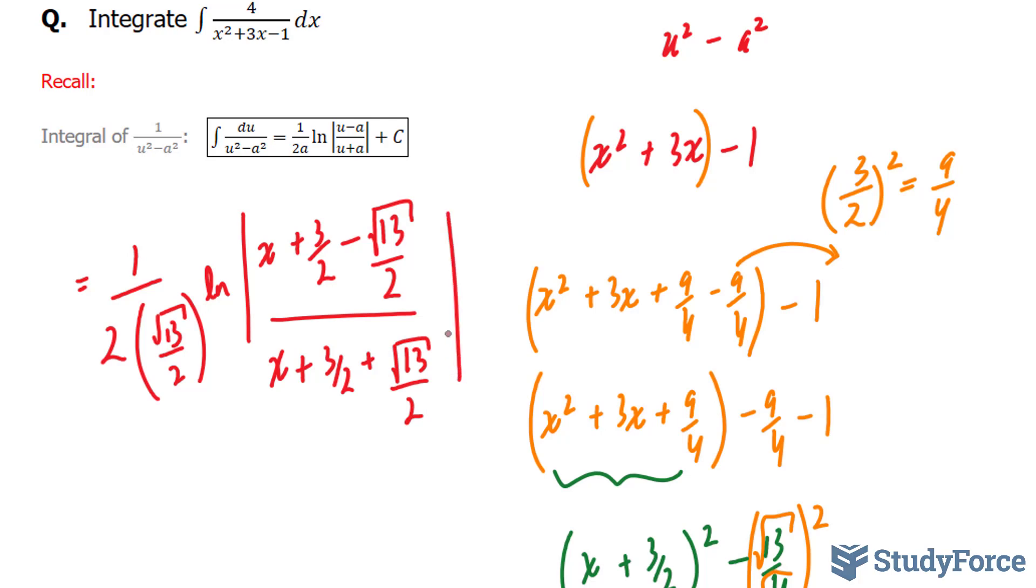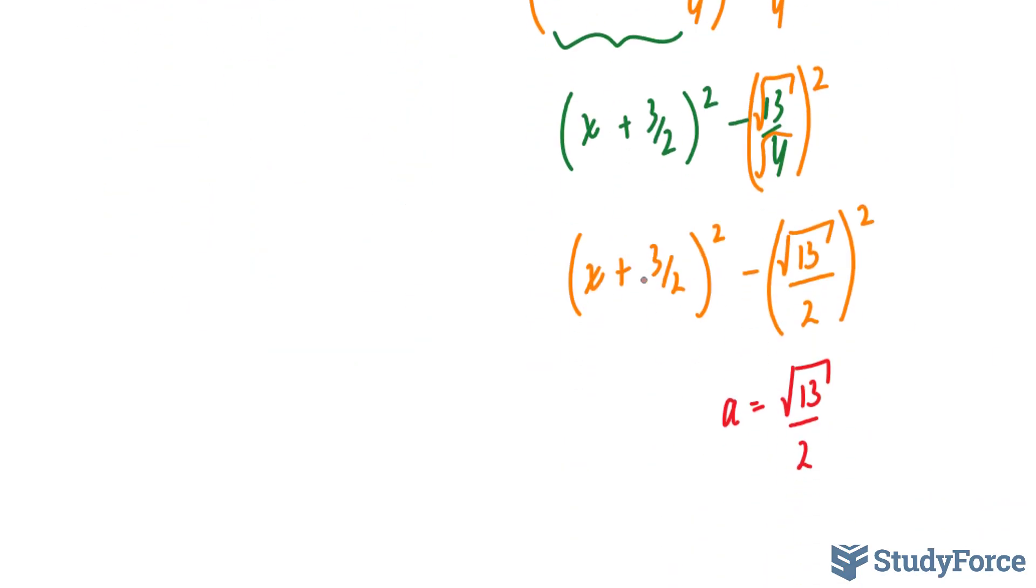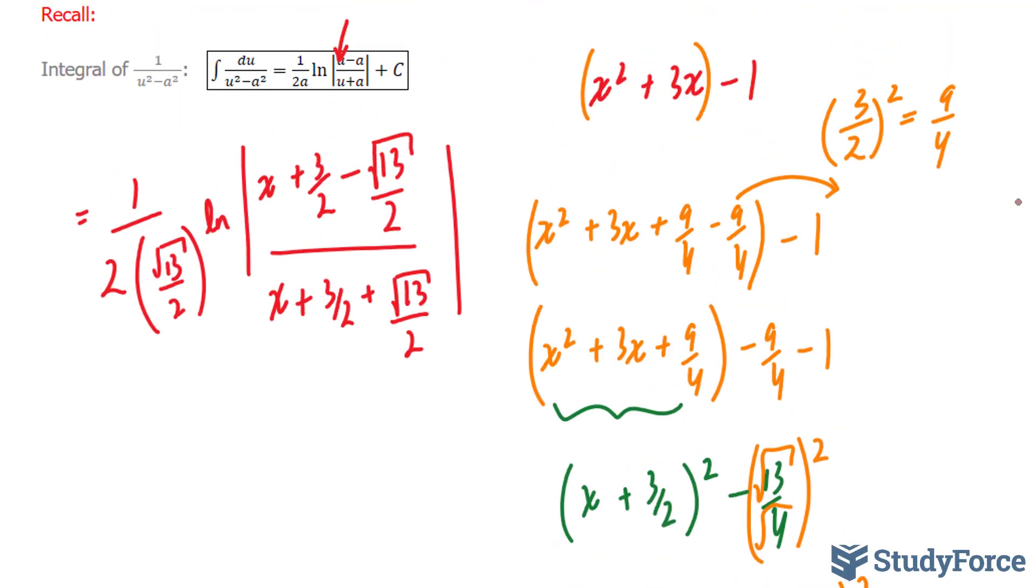And in case you're confused as to how I found x plus 3 over 2, remember this represents our u value. And our u value is the following, where we have u is equal to x plus 3 over 2.